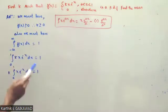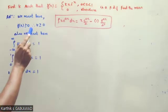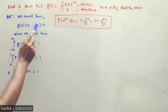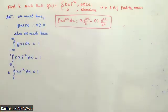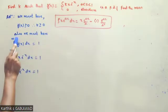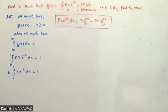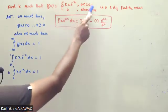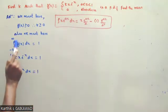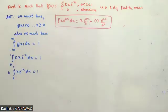We must have f(x) greater than or equal to 0. Therefore k should be greater than or equal to 0. Also, we must have the integral from minus infinity to infinity of f(x) dx equal to 1. This becomes the integral from 0 to 1 of f(x) dx equal to 1.